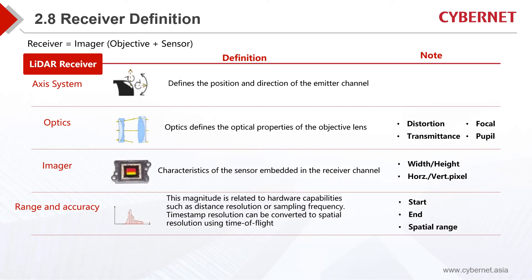Next, let's introduce the definition of the receiver. The receiver also has an axis system which needs to be precisely defined for the receiver position. We need to clearly define the coordinate origin, horizontal, and vertical axis. The most important part is the optics. This lens imaging part can be handled using ANSYS Zemax, and after Zemax completes the lens imaging setting, it will use a plug-in to describe the incidence of light and the path conversion of light. The imager can define width and height. Range and accuracy calculate the distance with high accuracy, such as the period of the beam emitted by a chip, the time interval between scan points, and the distance can be calculated in millimeters.